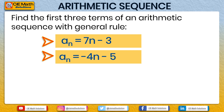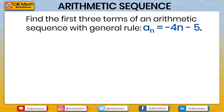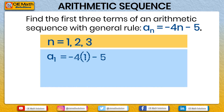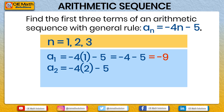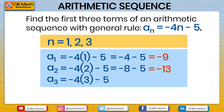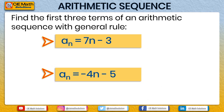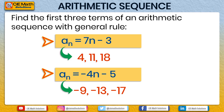For the second sequence with general rule AN equals negative 4N minus 5, we again substitute N equals 1, 2, and 3. A1 equals negative 4 times 1 minus 5, which is negative 4 minus 5, equal to negative 9. A2 equals negative 4 times 2 minus 5, which is negative 8 minus 5, equal to negative 13. A3 equals negative 4 times 3 minus 5, which is negative 12 minus 5, equal to negative 17. Therefore, the first three terms are negative 9, negative 13, and negative 17.